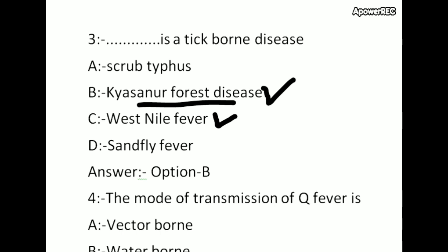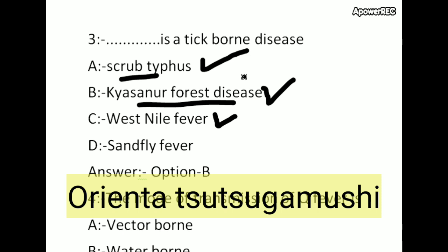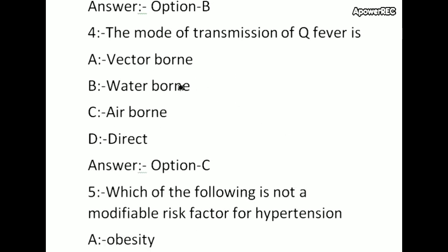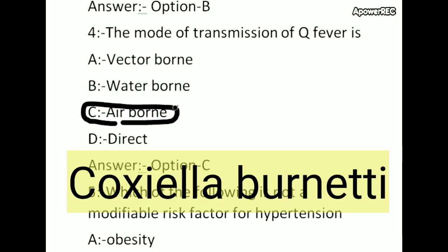West Nile fever virus spreads through mosquitoes. Scrub typhus — the other name is bush typhus. Scrub typhus is caused by the bacteria Orientia tsutsugamushi. The mode of transmission of Q fever — correct answer is airborne. Q fever is also known as query fever, caused by Coxiella burnetii, and it is an airborne bacterial disease.